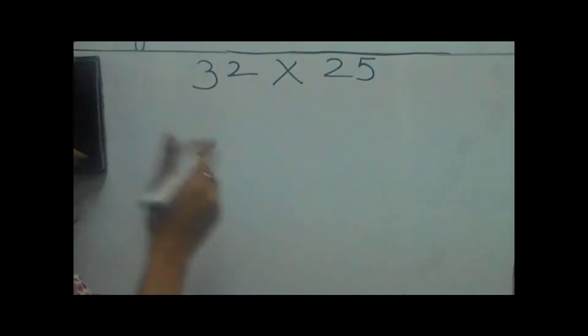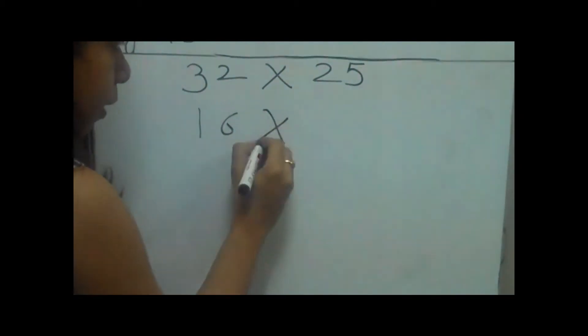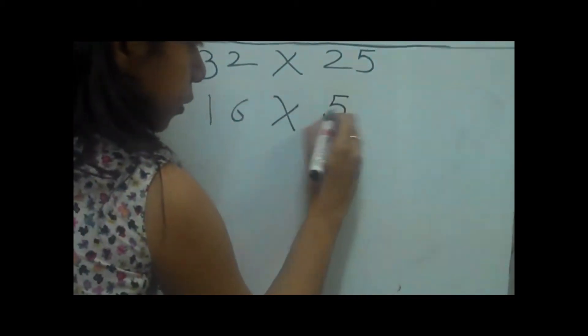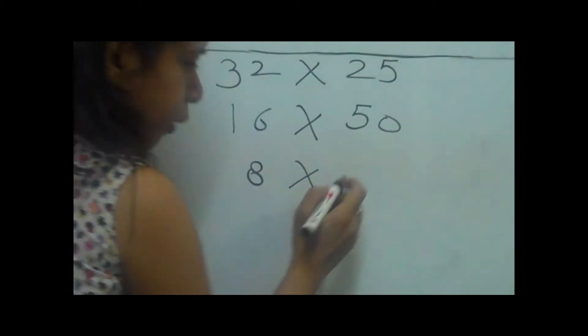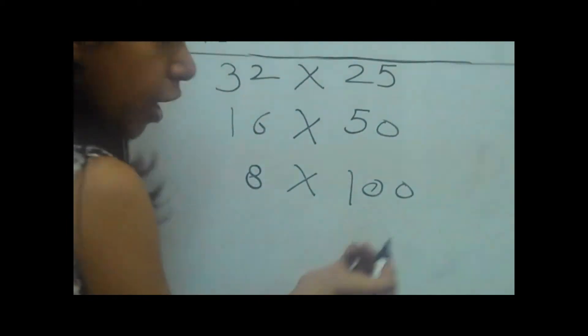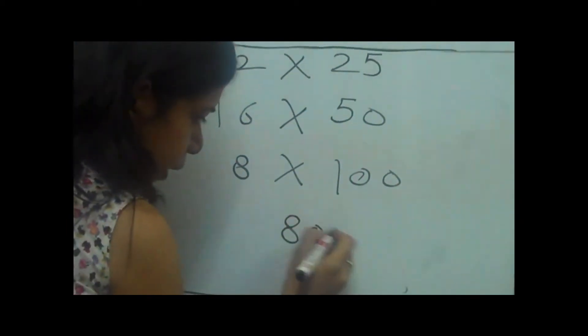So dividing 32 by 2 makes 16. Multiplying this by 2 makes 50. Now again, divided by 2 makes 8, and multiplied by 2 makes 100. And 8 into 100 is simple: 800.